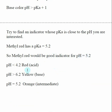If we are using methyl red and the pH was less than 4.2, we would see the acidic form of methyl red, which is a red color. If the pH was greater than 6.2, you would see the color for the conjugate base, which is yellow. And if our pH was very close to 5.2, you would see the combination of these two — red and yellow — which is orange. That's our intermediate color, and that's when we know the pH is going to be fairly close to the pKa of our indicator.